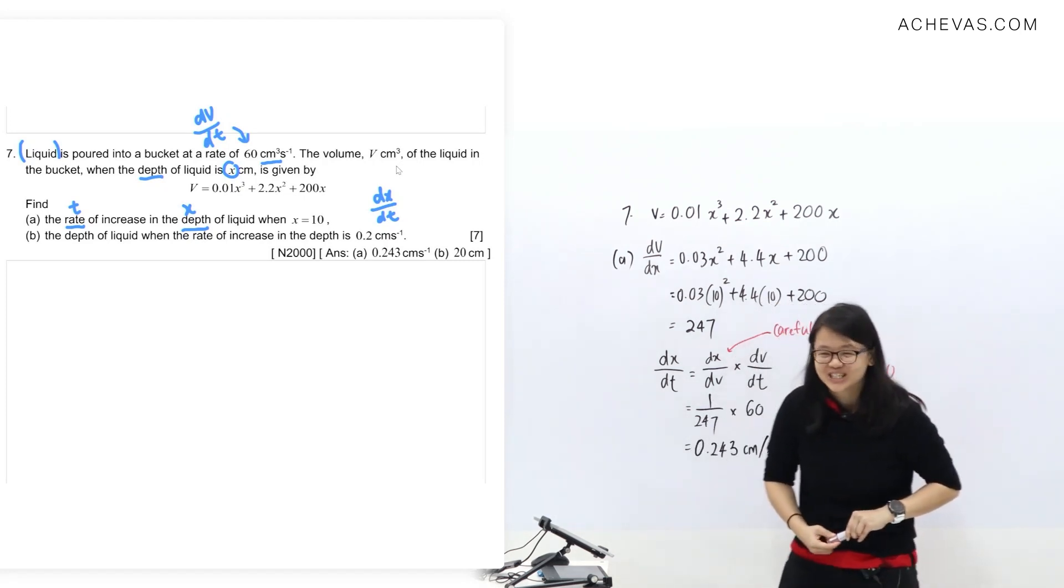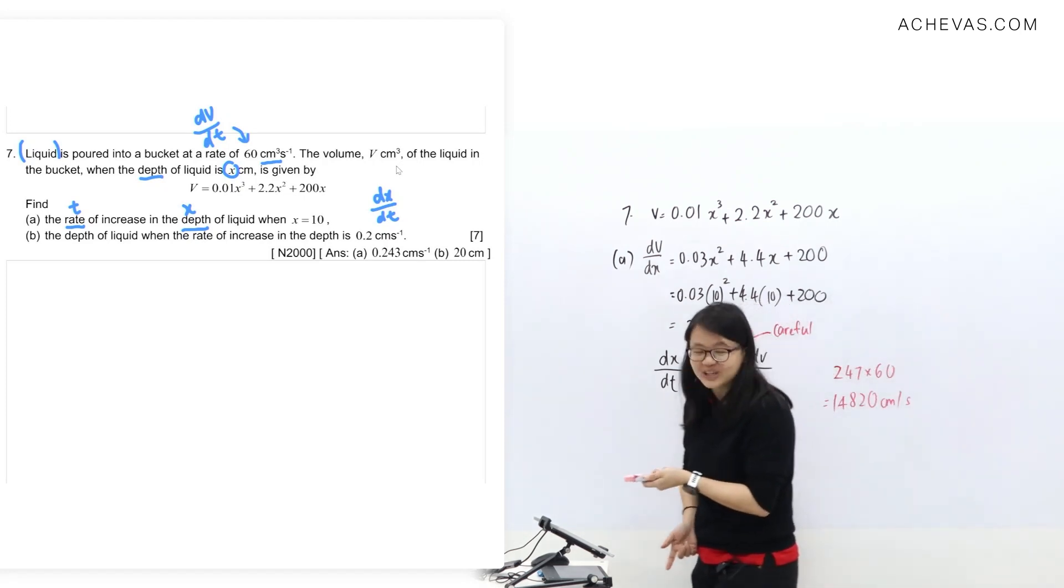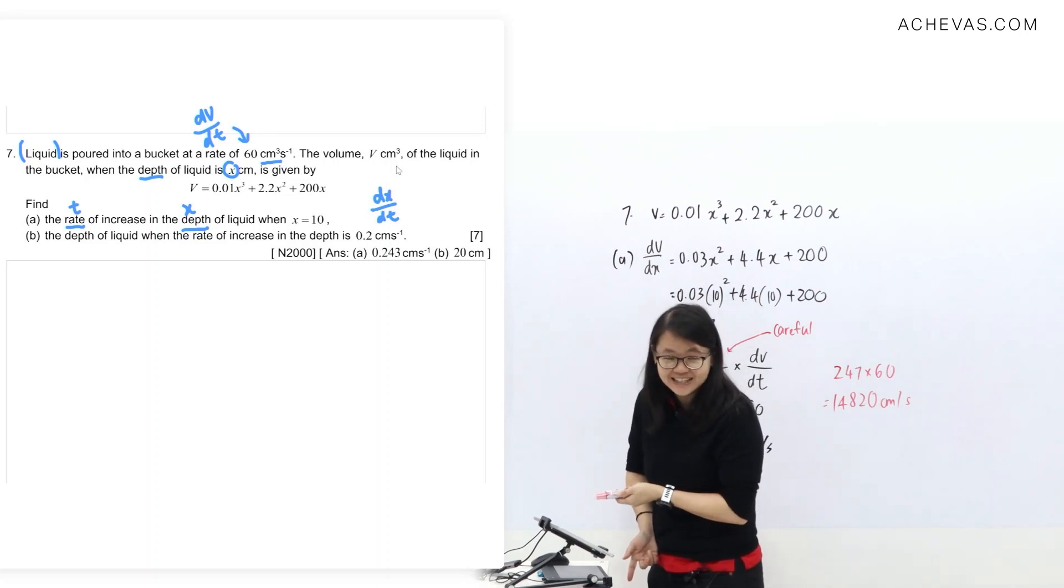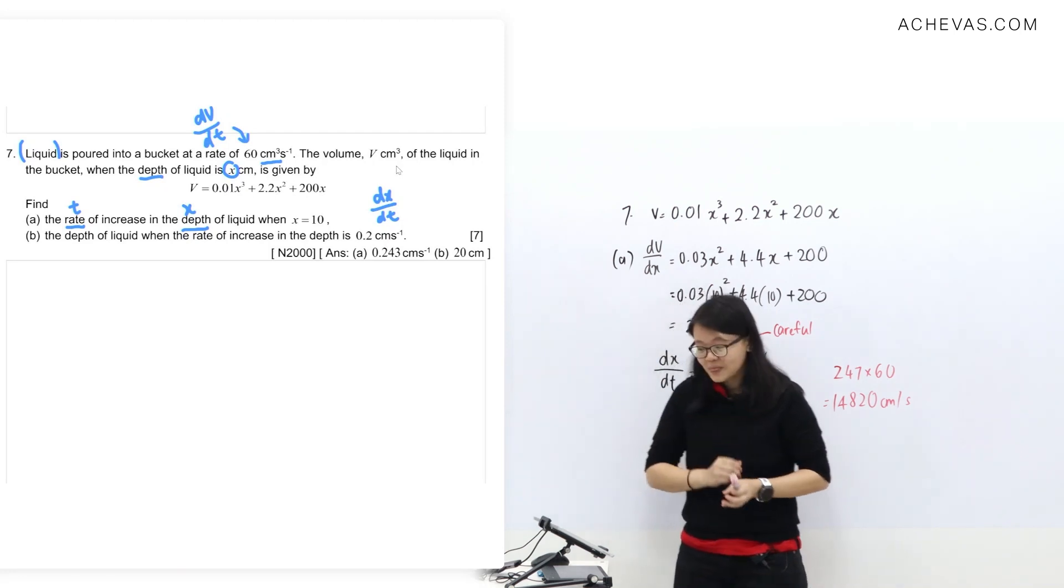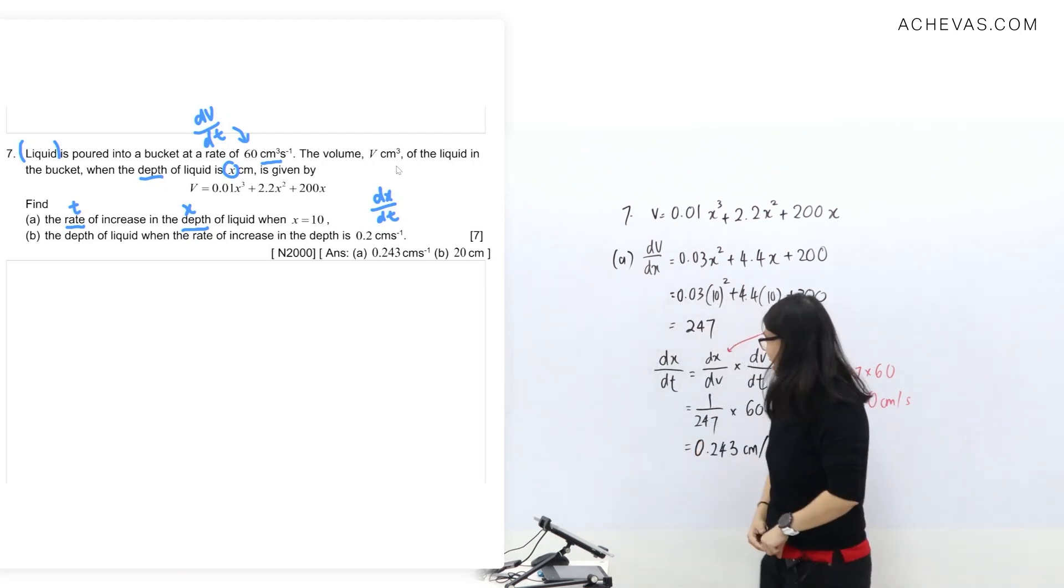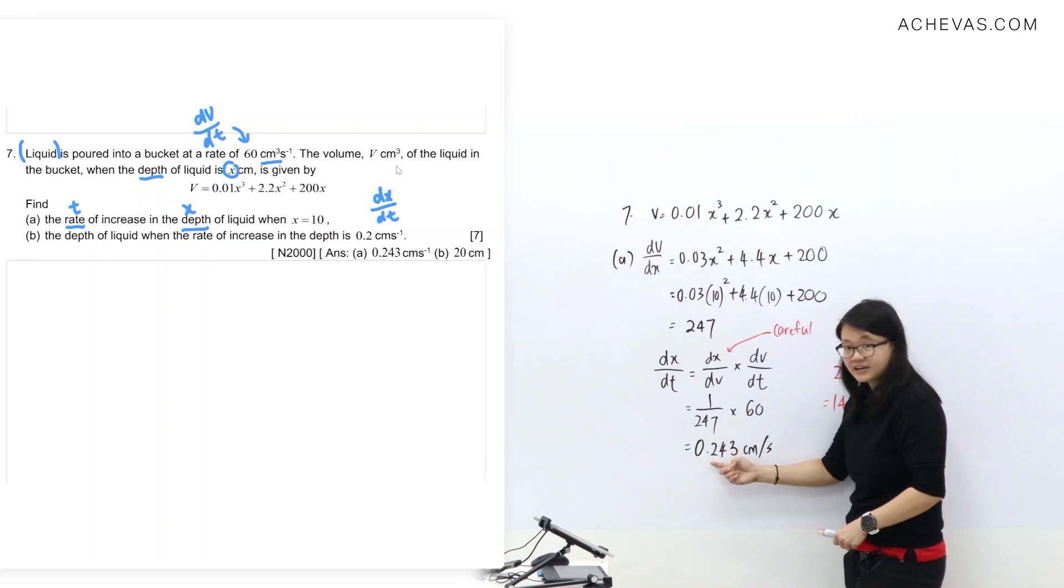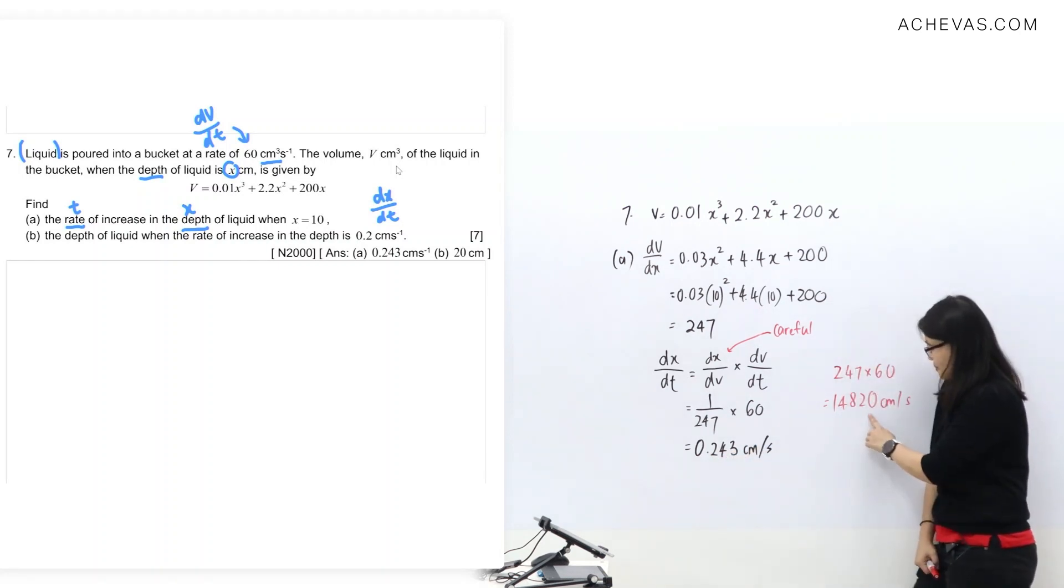Now I want you to think: sometimes one of the checkings in your math paper is called a logical check. You look at the volume - the volume increased at 60 cm cubed per second, and volume is like three-dimensional. So the depth increased by this one a bit. If you look at this answer, the depth increased by so much per second - you just think whether it's logical or not.